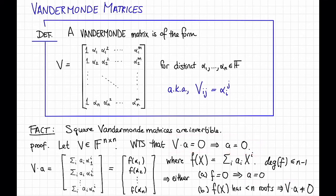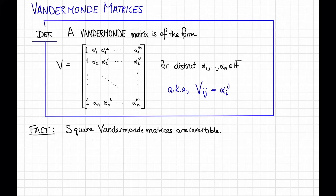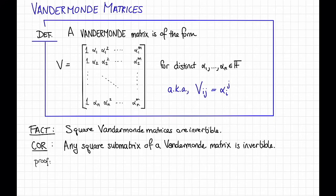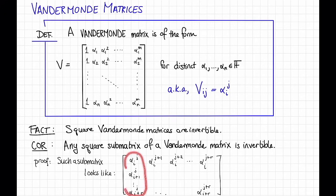Okay, so square Vandermonde matrices are invertible. Let me erase this proof so that we can have space to write a corollary. So the corollary is that any square submatrix of a Vandermonde matrix is also invertible. Here's a proof. Any such submatrix looks like this. That is, it's an r by r matrix, so that the j-th powers of some of the alphas live here, the (j+1)-st powers are there, and so on.